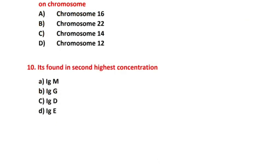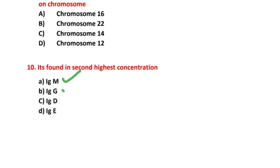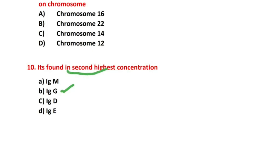Question number 10: Which immunoglobulin is found in the second highest concentration? Immunoglobulins include mu, gamma, delta, and epsilon. The first highest is gamma (IgG). The second highest is M (IgM).